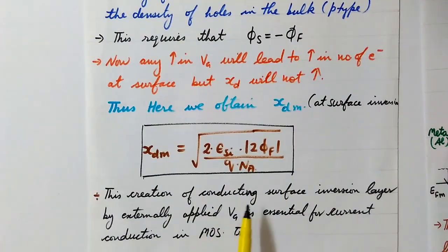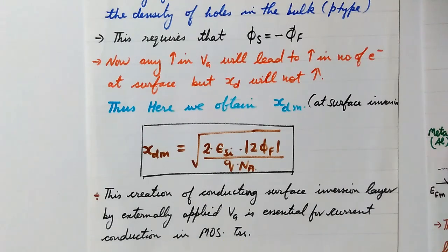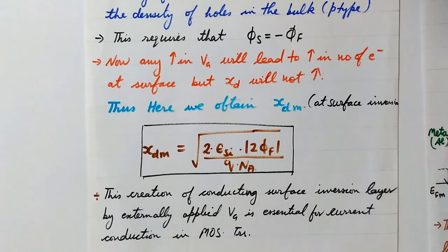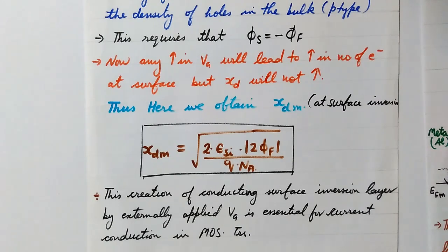This creation of a conducting surface inversion layer by externally applied Vg is essential for current conduction in a MOS transistor. Numerical problems usually come on this topic, so you should remember the maximum width condition as well as how to calculate the normal depletion region width. In my next video we will be discussing the working of the MOS transistor. Thank you, and please share and subscribe to my channel.